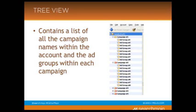The bottom three — campaign three, campaign four, and campaign five — are just minimized, so you don't see the ad groups. You just click on the name of the campaign or ad group that you would like to view, and it'll show up in the data view. The data view is below on the right side of the screen, and that's where all of the data shows up for you to view and to make changes to.